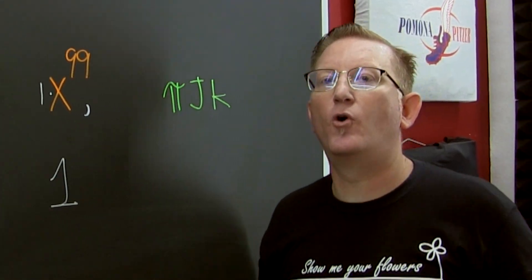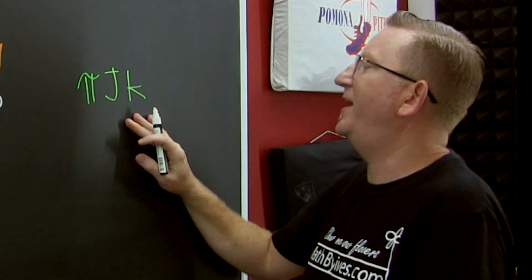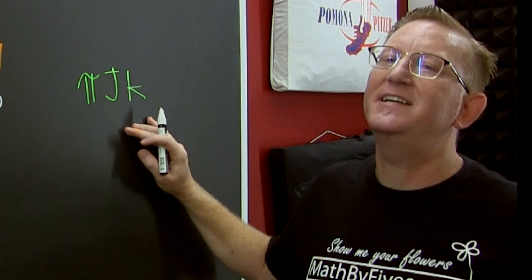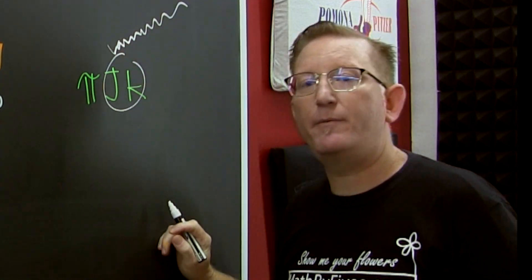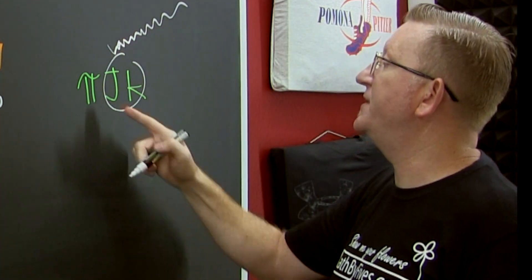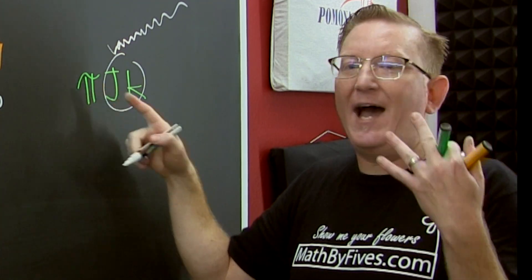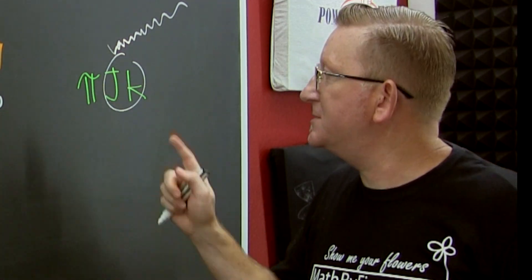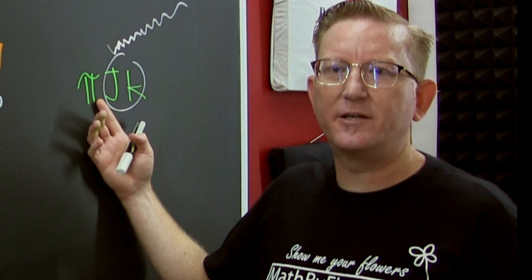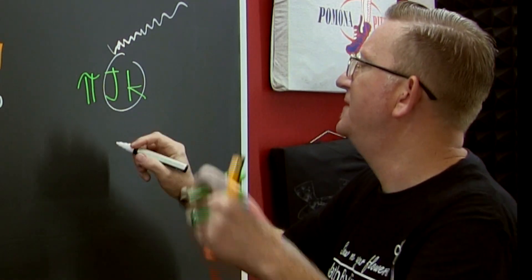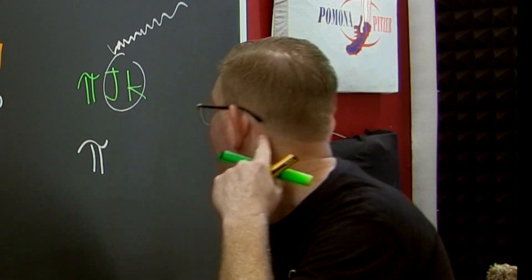JK is the variable part. But what's the number? The number in front is pi. Why? Because the number, it's pi - it's irrational. So what's the numerical coefficient? Pi.